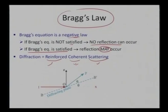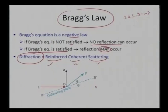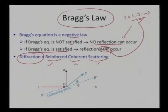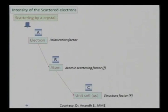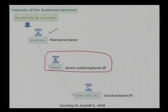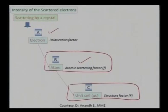Bragg's law 2d sin θ = nλ is a negative law: if I am not satisfying this equation my reflection will not occur, but if the condition is satisfied it may occur. There are scattering factors: initially we have scattering by individual electrons giving a polarization factor, then the whole atom with many electrons has an atomic scattering factor, and all those atoms arranged in a unit cell give the unit cell structure factor.